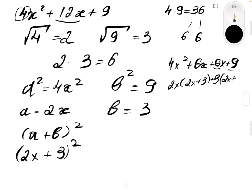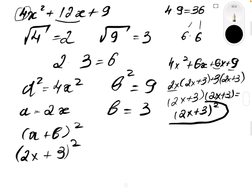So we can factor out 2x plus 3. If you take out 2x plus 3, what's left over is 2x, and from the second group, what's left over is 3. So we have 2x plus 3 times 2x plus 3, which is simply 2x plus 3, all squared. And you can see this matches our answer.